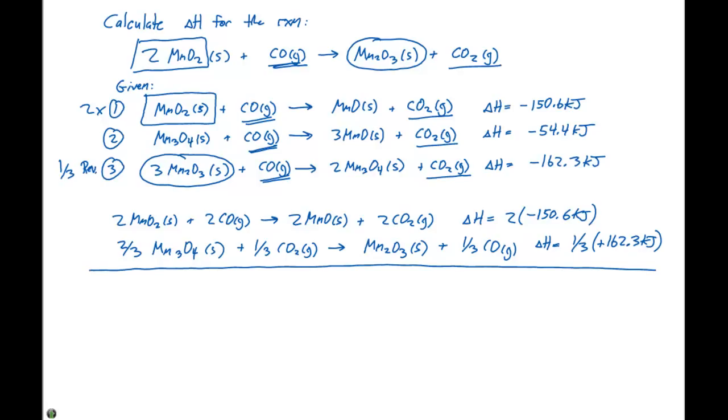If we now add these two together, we're going to get 2MnO2 solid plus five-thirds CO plus two-thirds Mn3O4, giving us 2MnO plus five-thirds CO2 plus Mn2O3 as a solid. Notice that since CO2 showed up on both sides of this reaction, they're going to cancel out to give us five-thirds over here on the product side.